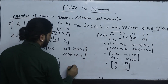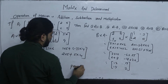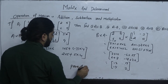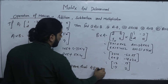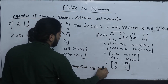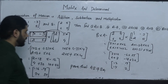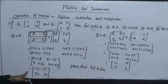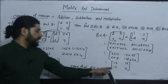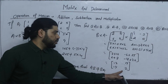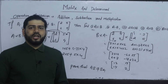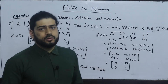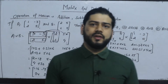Prove that A×B is not equal to B×A. The value of A×B is minus 16, minus 7, 34, 35, while B×A gives 12, 19, 14, 2. Therefore A×B is not equal to B×A.